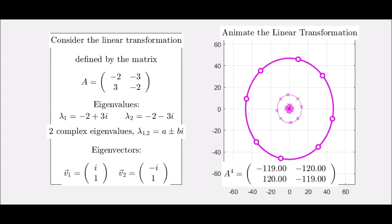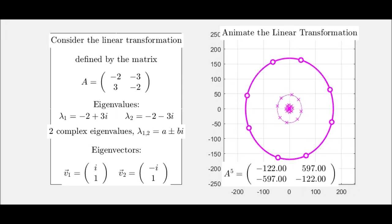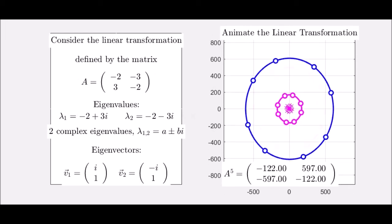In this case, as we continue to repeat, repeatedly multiply A to the fifth times that circle, A to the sixth, and so forth, then we see that the circles get progressively larger.